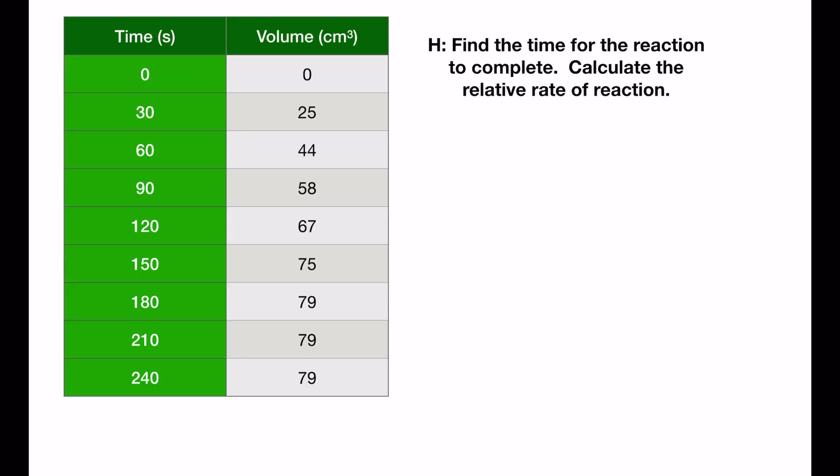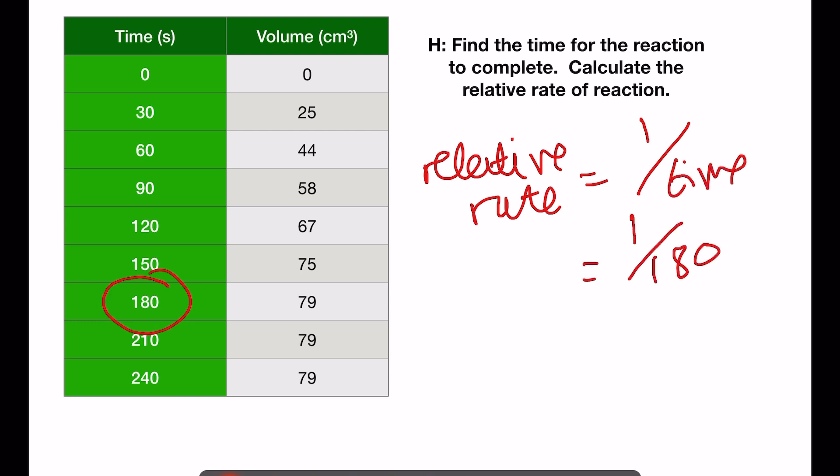For higher, we calculate the relative rate of reaction. For us, the reaction is finished at 180 seconds. Relative rate is equal to 1 divided by time. So here the relative rate will be 1 divided by 180, which is 0.056 per second.